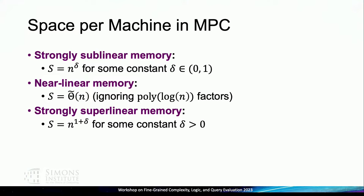A question was raised about why memory is characterized with respect to n. I think a lot of this intuition comes from the streaming setting — specifically semi-streaming, where the memory used is in terms of n instead of m. That's just the definition of the streaming setting, and I think the parameter chosen here is taken with respect to that intuition. Regarding machine connectivity: we assume a fully connected communication network with point-to-point messages.